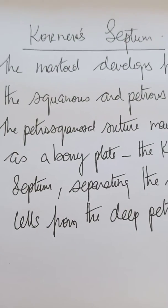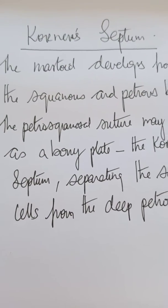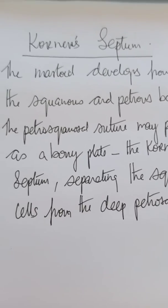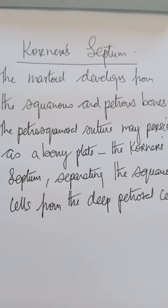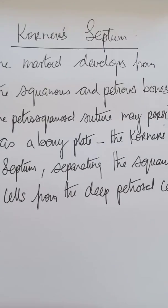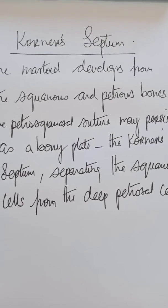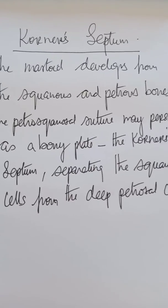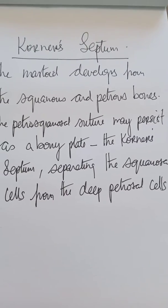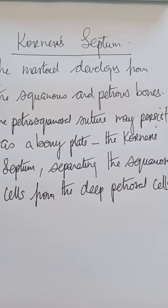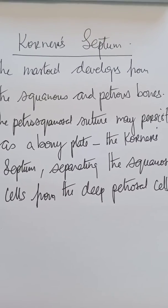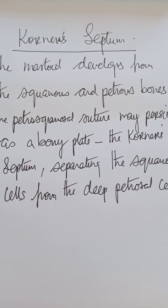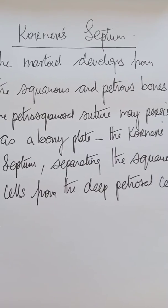What do you mean by the Körner's septum? The mastoid develops from the squamous and petrous part of the temporal bones. The petrosquamous suture may persist as a bony plate, and this bony plate that divides the mastoid antrum is called the Körner's septum.